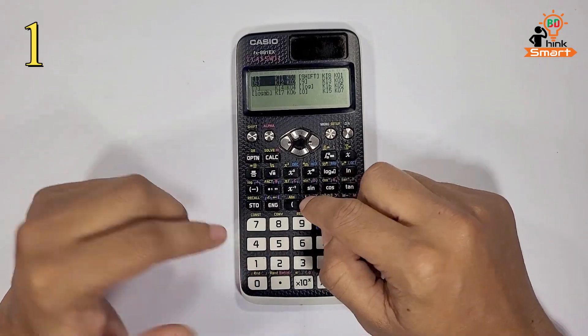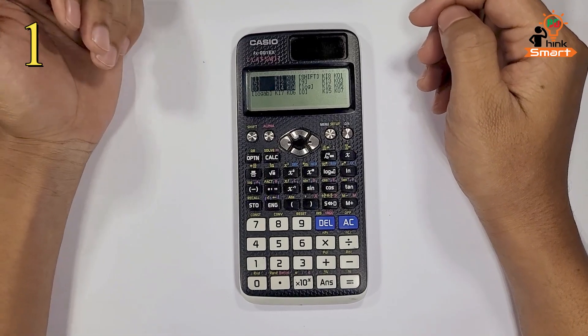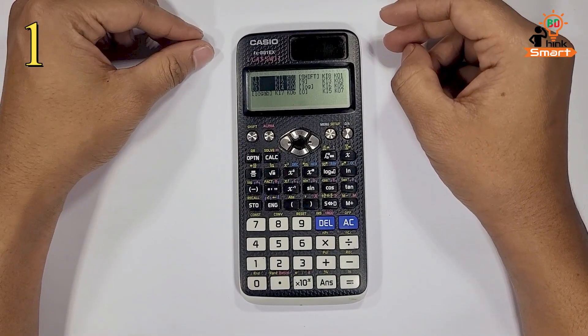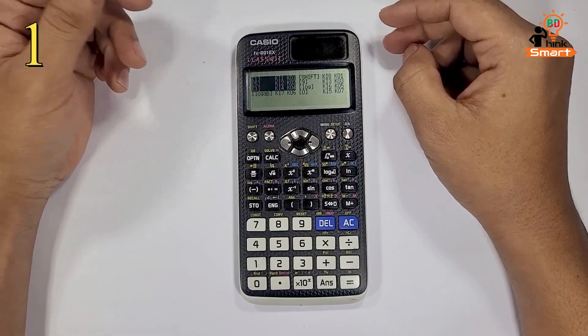1, 5... In genuine calculators, you can verify the keys, whereas in replica or duplicate products, you cannot verify the keys.